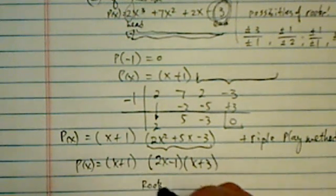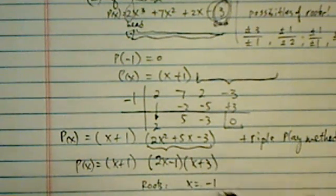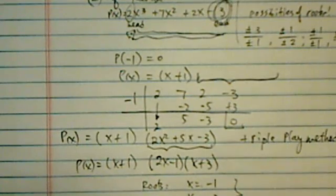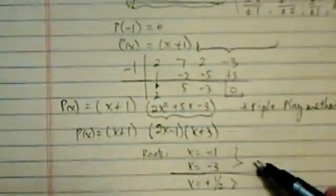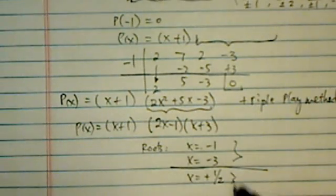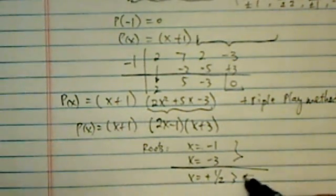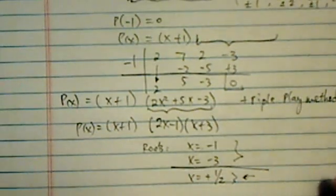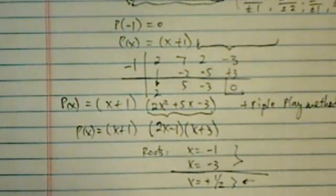So roots are X equal to minus 1, X equal to minus 3, and X equal to positive 1 half. And what do you know? This Descartes theorem is right on. I said it has a maximum of 2 negative solutions and a maximum of 2 positive solutions. In the end, we actually just have 1 positive solution. All right, I hope I didn't go too quick.